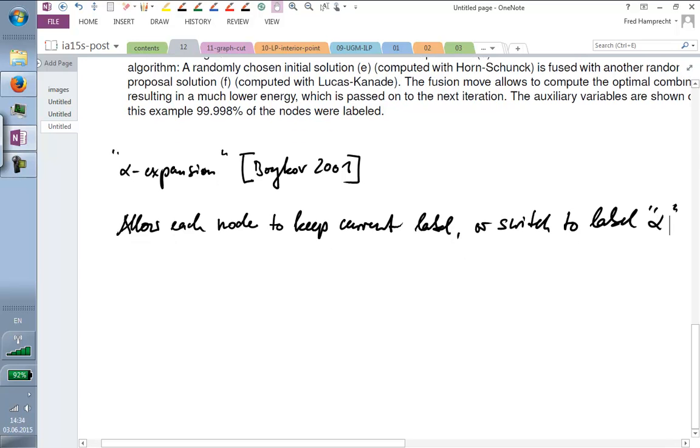I'm going to look at the specific case of alpha expansion, which is maybe the most popular move-making algorithm. And this is a Boykov 2001 paper. So, in alpha expansion, we do the following. We allow each node in our graphical model to either keep the current label or switch to some label which we have randomly selected, alpha.